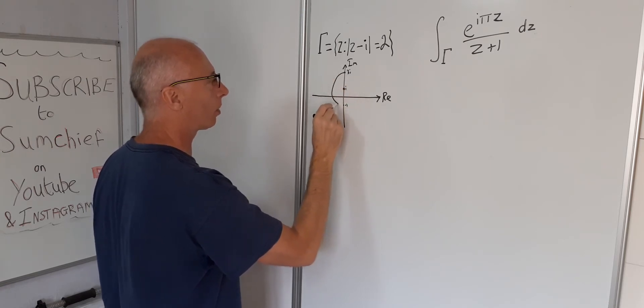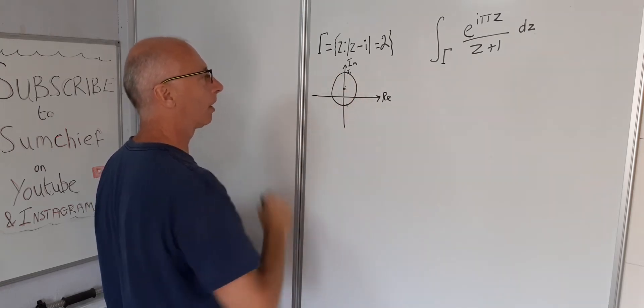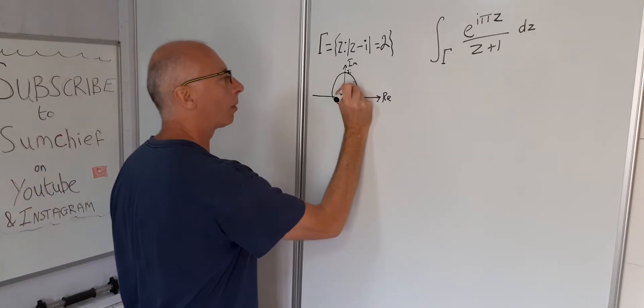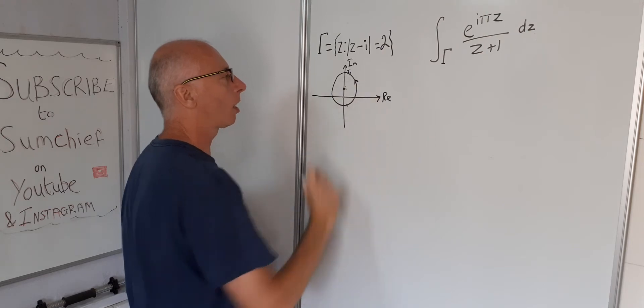So we will try and draw a circle if I can. Okay, so that's our gamma. It will always go in an anti-clockwise manner.